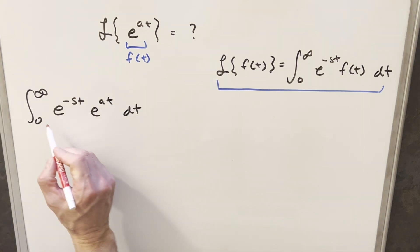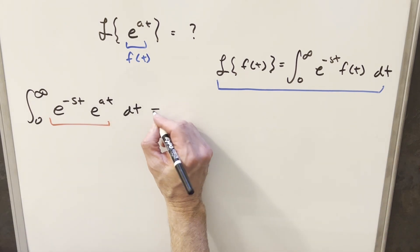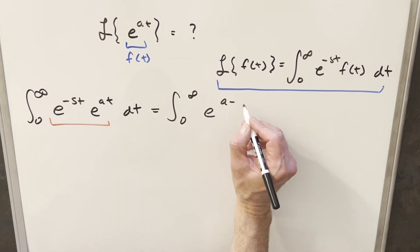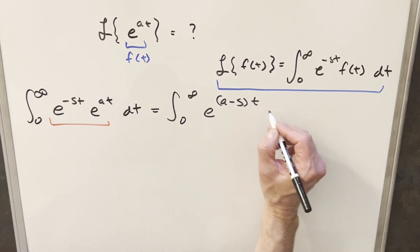But now here, because we have base e on both these things, we can actually just multiply this together and consolidate it. So what's going to happen is we're just going to add together the exponents, and I can write this as e to the (a minus s)t dt.